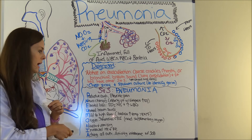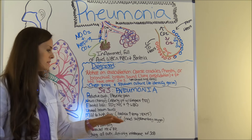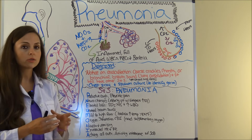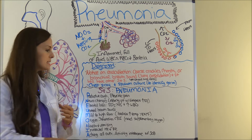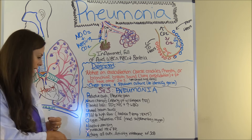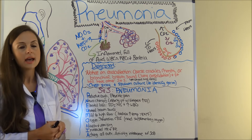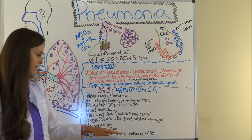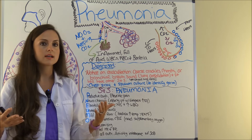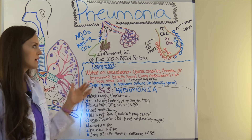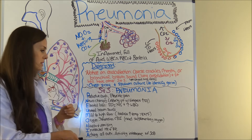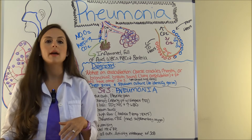Continuing the PNEUMONIA mnemonic: O: oxygen saturation will be decreased, often less than 90%, and the patient will need supplementary oxygen. N: nausea and vomiting — these patients feel horrible, don't want to eat, and feel sick to their stomach. I: increased heart rate and respiratory rate — they'll be tachypneic and tachycardic because of the infection and hypoxemia; the lungs try to increase the respiratory rate to blow off carbon dioxide and bring in more oxygen, but it's not working because the alveoli sacs are inflamed. A: aching all over — they feel horrible and have activity intolerance with shortness of breath; simply moving from the bed to a chair will make them very winded.